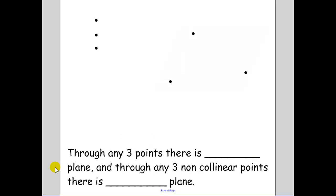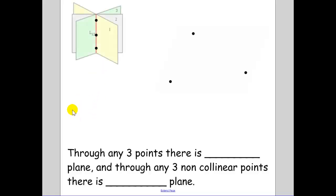Through any three points — I have three points up here on the left — think about how many planes can go through those three points. I have a picture here because I think it really demonstrates this well. If I have three collinear points, three points that all fall on a line, I'm going to have an infinite amount of planes that go through there. So there is at least one plane.